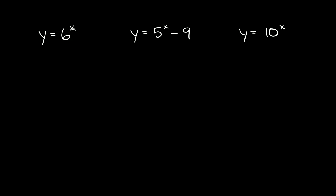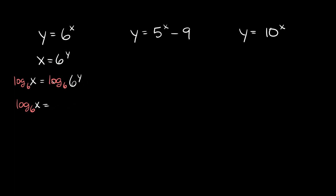So first we have y is equal to 6 raised to the x. The first thing you want to do is just flip x and y. So we're going to rewrite this as x is equal to 6 raised to the y. Now in order to solve for an exponent we have to get rid of this base, this 6. So in order to get rid of this base we need to take the log base 6 of both sides — log base 6 of x is equal to the log base 6 of 6 raised to the y.